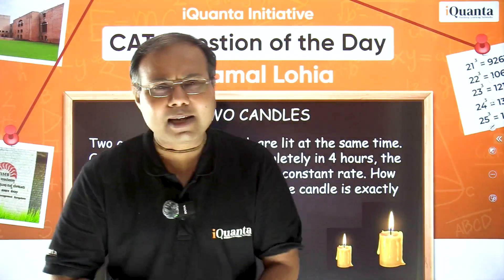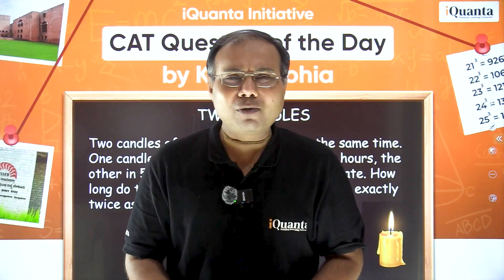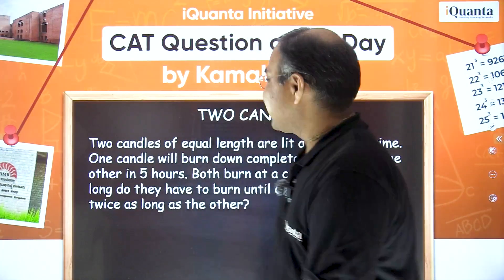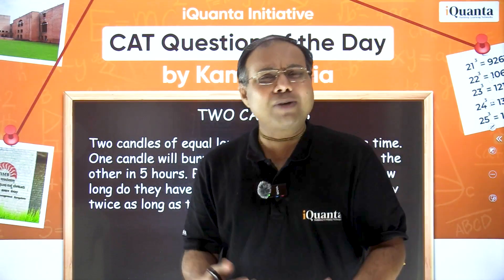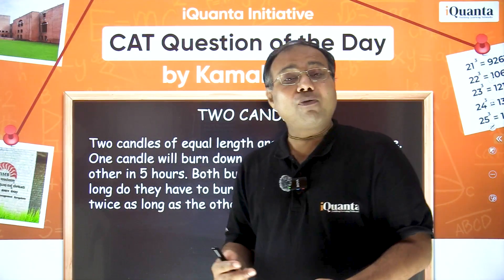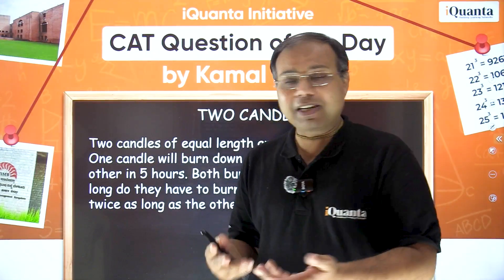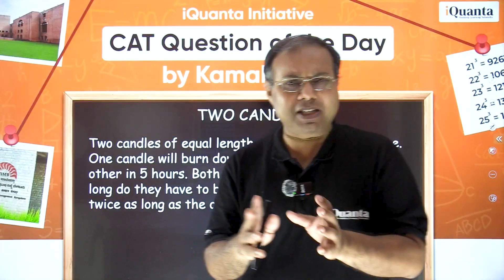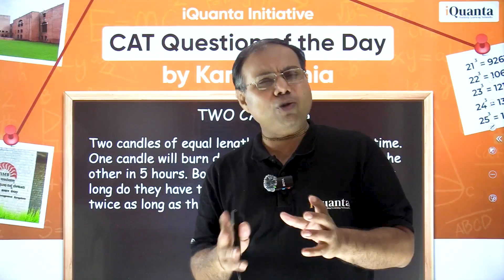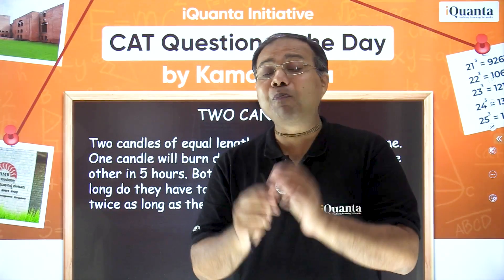Okay, coming back now. I hope you've solved the question; if not, please rewind and solve it on your own first. This question belongs to a category of word problems — it appears to be a situation of time and work, where the work is the burning of a candle and there are different rates of burning. It's related to time and work, basically arithmetic, and we can answer it using simple ratios.